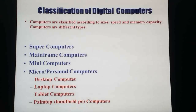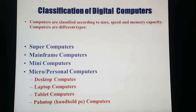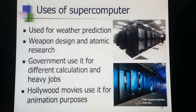Now the classifications of digital computers: computers are classified according to speed and memory capacity. There are mainly four types of digital computers — supercomputer, mainframe computer, minicomputer, and microcomputer, which is also called personal computer. First, we will discuss the uses of supercomputer. You can see the image of the supercomputer. It is used for weather forecasting, weapon design, and atomic research purposes by scientists.